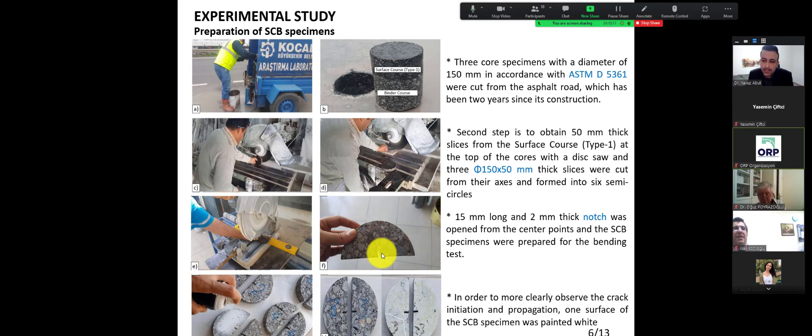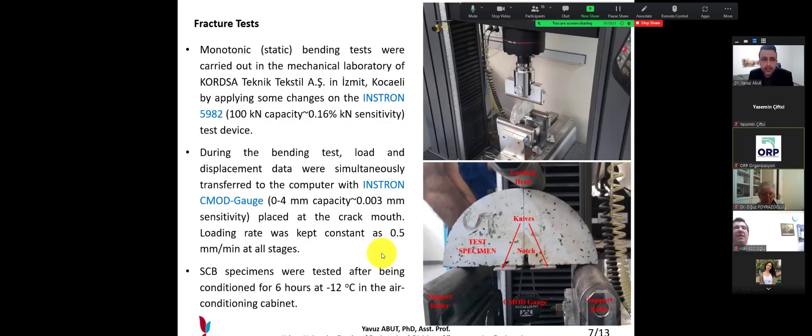Fracture test is applied by two options: static or dynamic. We used the static monotonic test type. Monotonic bending tests were carried out in the mechanical laboratory Corsa in Izmit, Kojeli. By applying some changes on the Instron 5982 test device, it has a 100 kN capacity and 0.16% sensitivity. During the bending test, load and displacement were simultaneously transferred to the computer with Instron CMOD gauge.